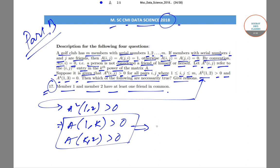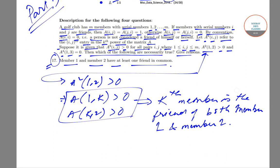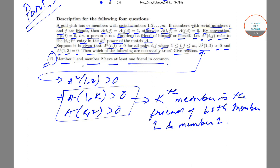So that basically means that K is the friend of member 1. The Kth member, we can say, is the friend of both member 1 and member 2. So K is the common friend of member 1 and member 2. There can be many more.